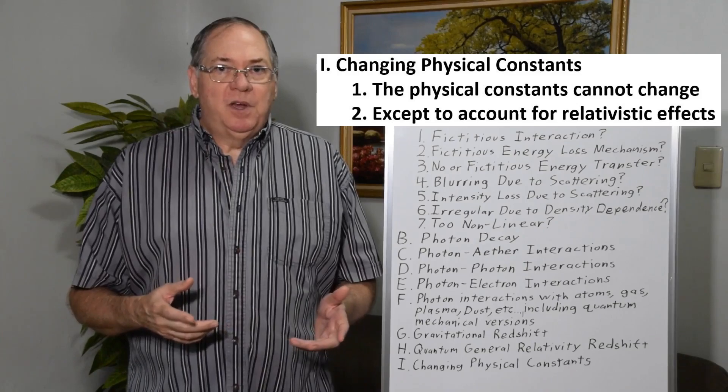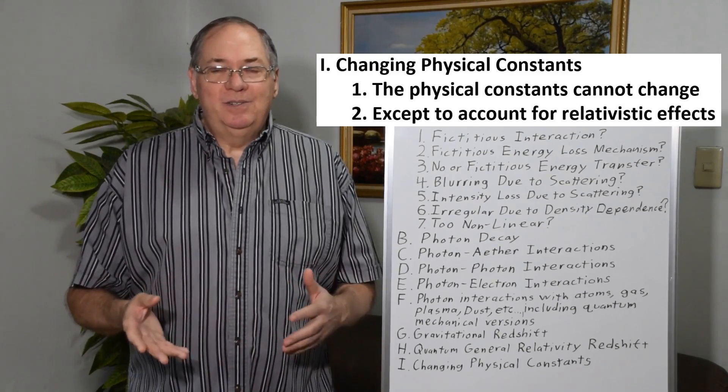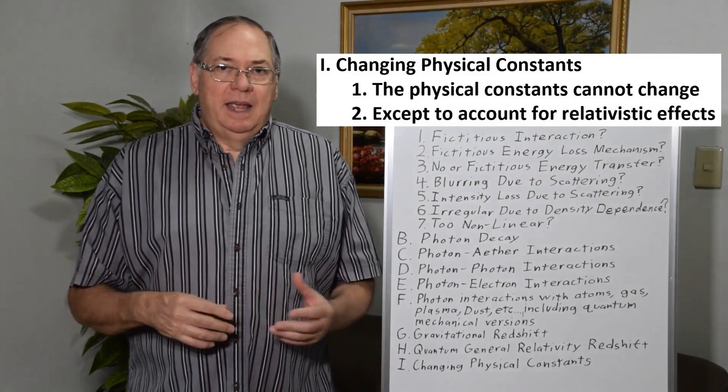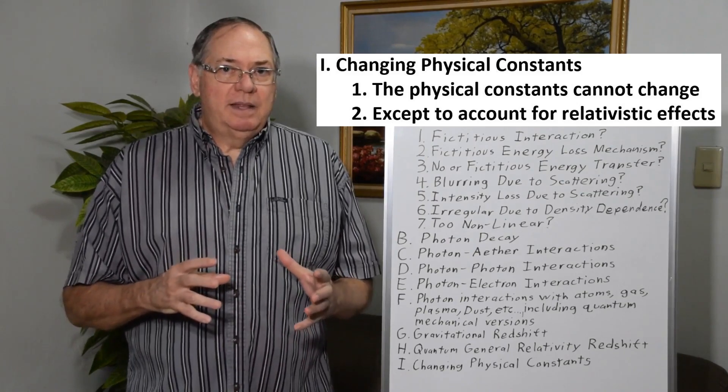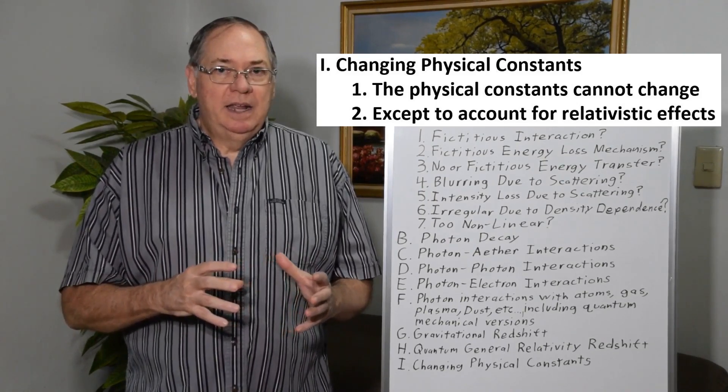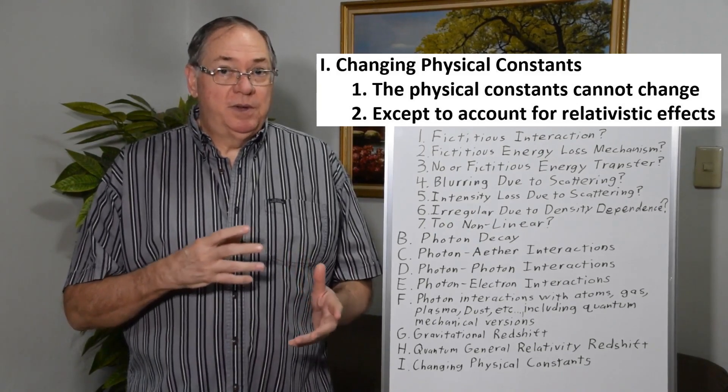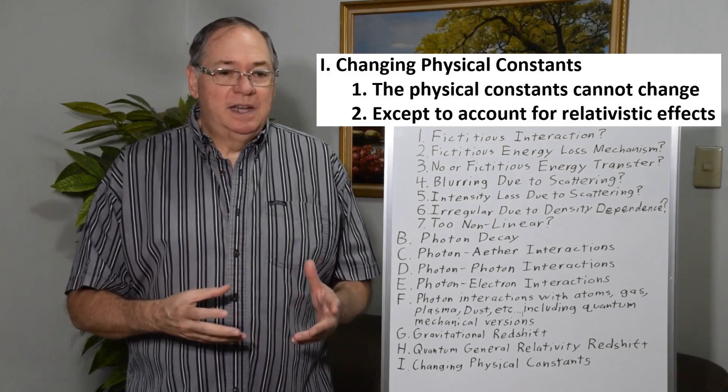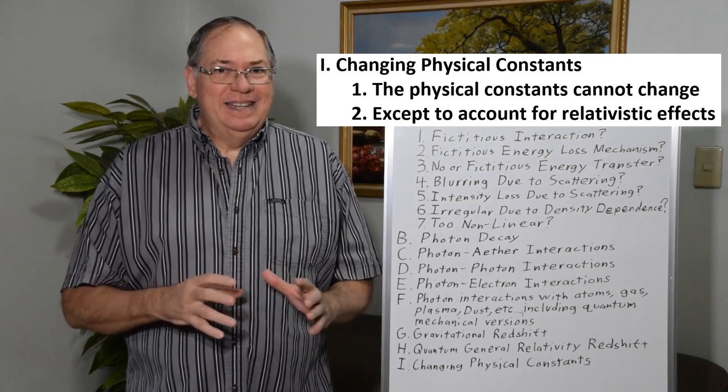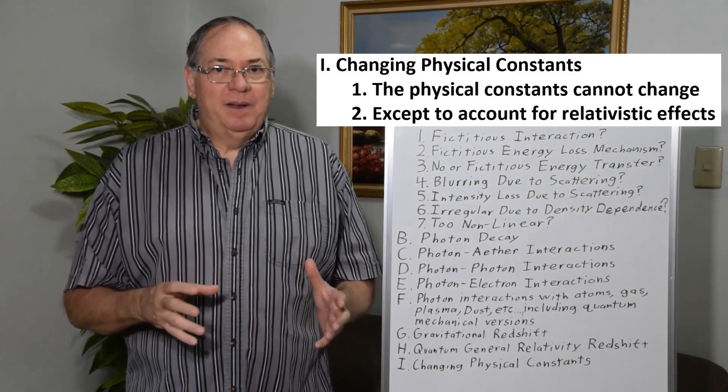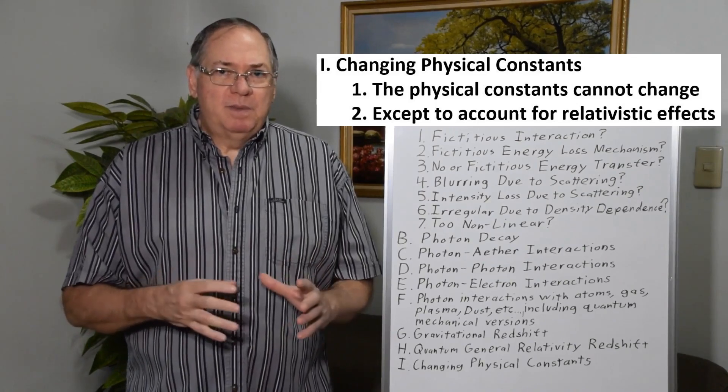And the last big group I want to talk about is the laws of physics change so that photons lose energy over time and distance. And as I've said in other videos, if you look at the way that the physical constants are interrelated, there's only very limited ways they can change, mostly to account for general relativistic effects. So changing the physical constants generally is a non-starter in any model of physics that works. So these generally fail.